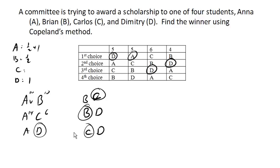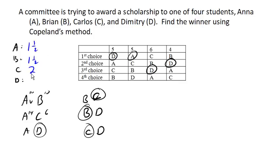In the end, A gets one and a half points, B gets one and a half points, C gets two points, and D only gets one point. So C wins the scholarship.